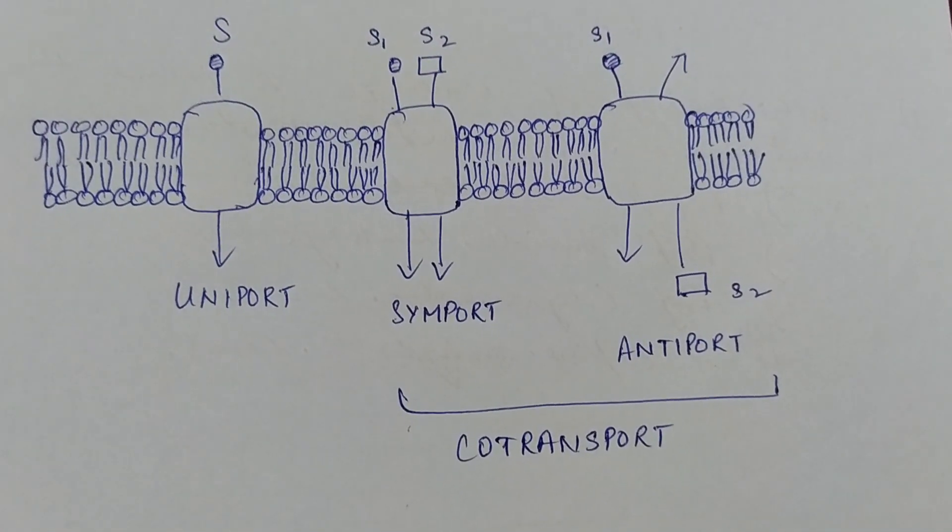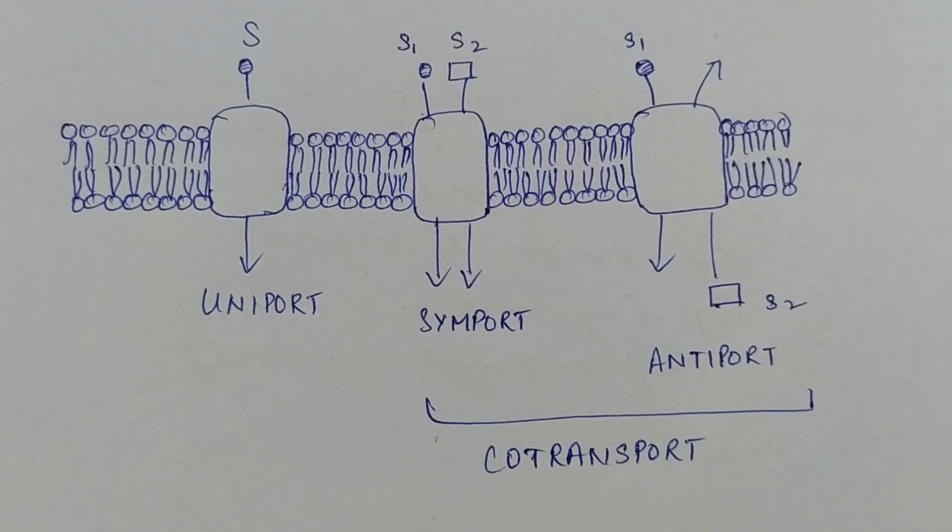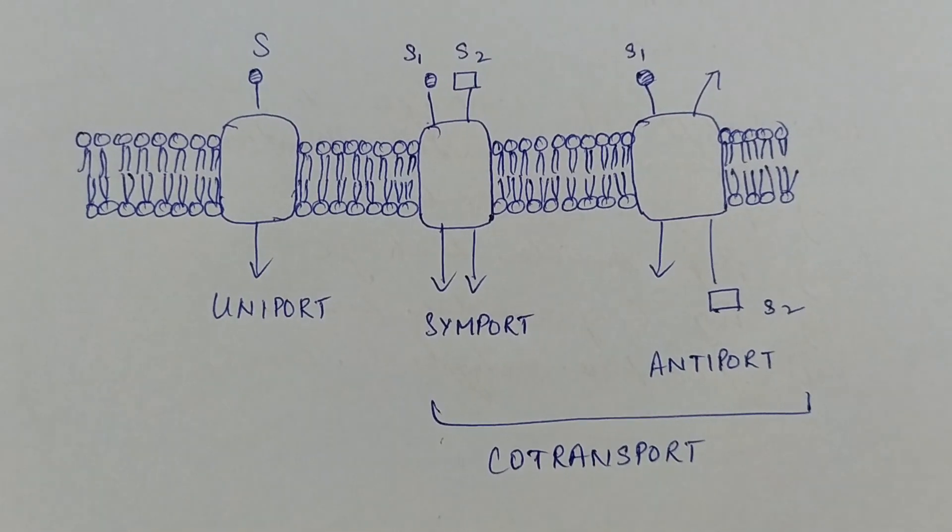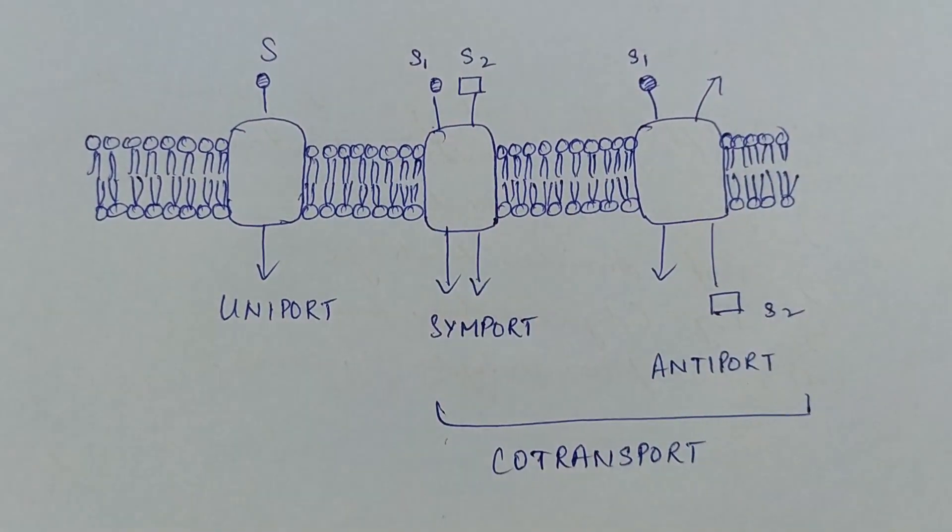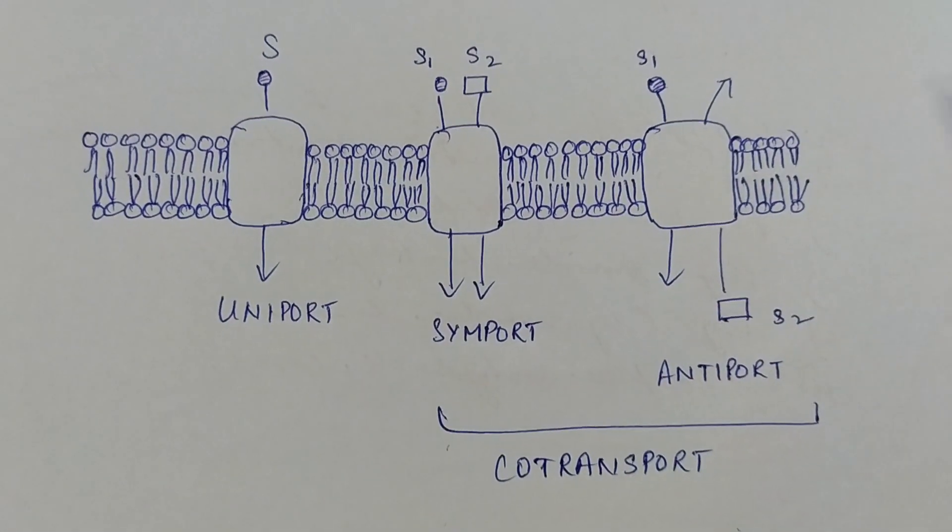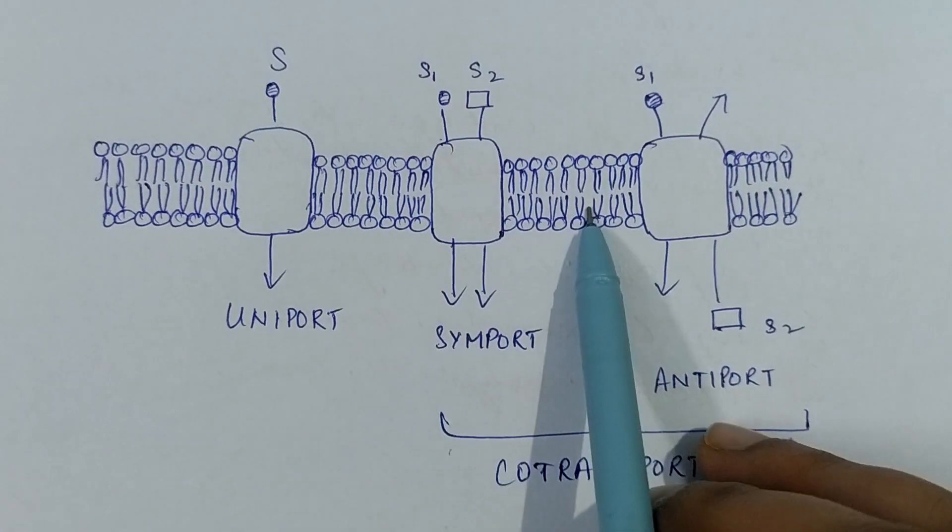Now talking about the different types of membrane proteins that help in transport of molecules across a membrane. We have three different methods or three different movements of molecules. So as you can see, this is the plasma membrane.